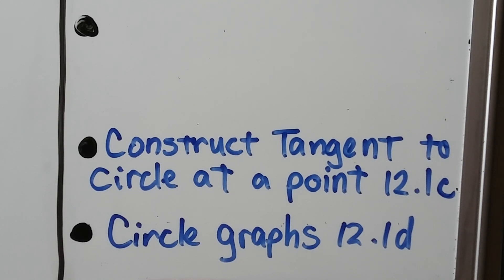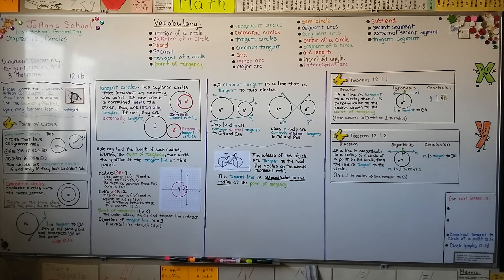For the third part of this lesson, 12.1C, we're going to construct a tangent to a circle at a point. And for the fourth part of this lesson, we're going to talk about circle graphs in 12.1D. Sorry about the reflection on the board. When we have sunny days, you can see my window in the reflection. I hope you're doing well, and keep trying, and I'll see you next time. Bye.